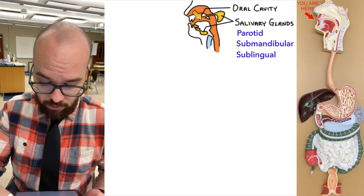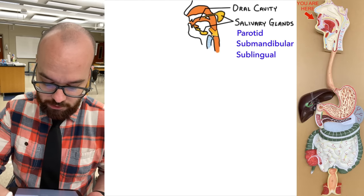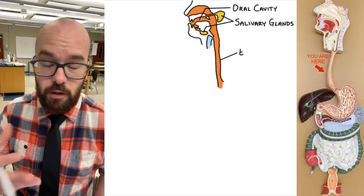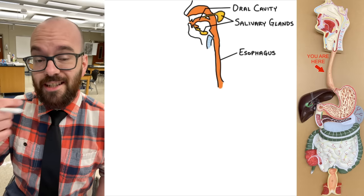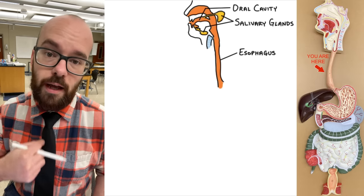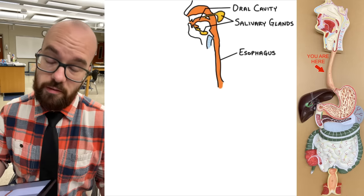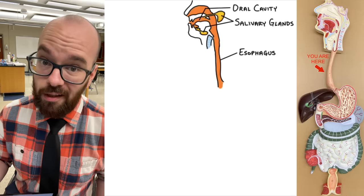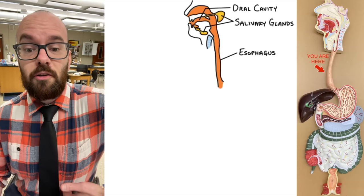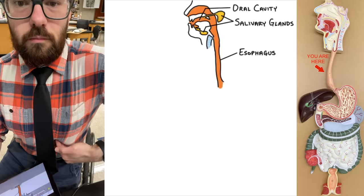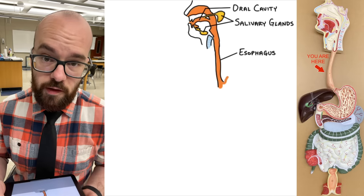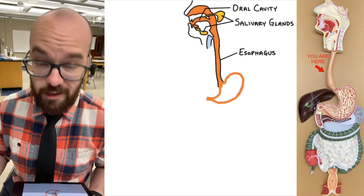Connected to the oral cavity, we have our throat, and our throat connects to our esophagus. That's where food travels after we swallow — it takes food from the oral cavity all the way down to our stomach. Which, as you saw in the intro, is not in your belly. If you want to find your stomach on your body, put your hand underneath your ribs on the left side — that's kind of where your stomach is. Just inferior to the esophagus is the stomach.